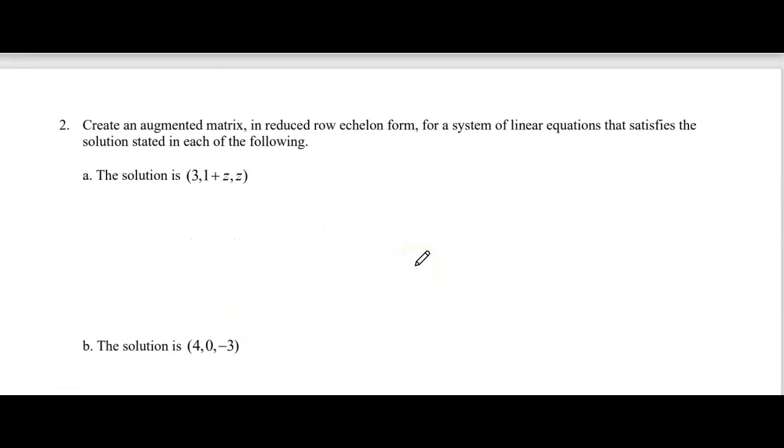The other question was this one. The solution is, so we have X equals 3, we have Y equals 1 plus Z, and we don't know about Z. Z is Z. That's not very useful.